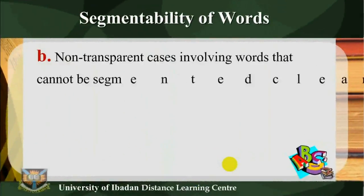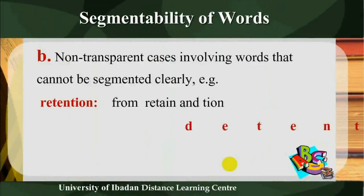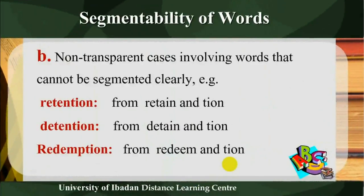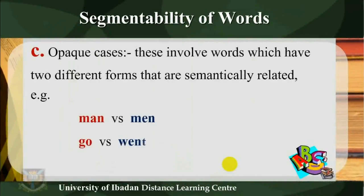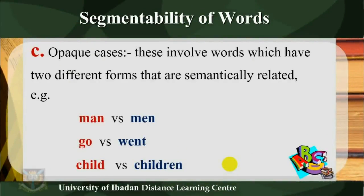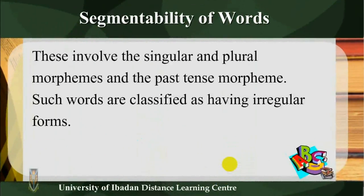B: non-transparent cases, involving words that cannot be segmented clearly. Examples: retention from retain, detention from detain, redemption from redeem. C: opaque cases — these involve words which have two different forms that are semantically related. Examples: man versus men, go versus went, child versus children. These involve singular and plural morphemes and past tense morphemes. Such words are classified as having irregular forms.